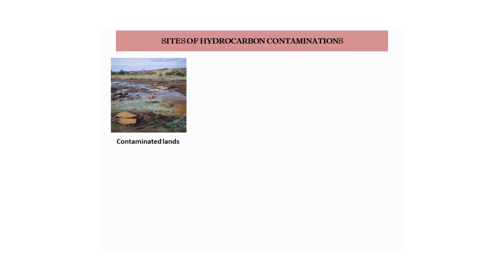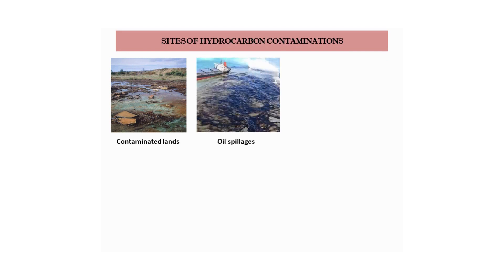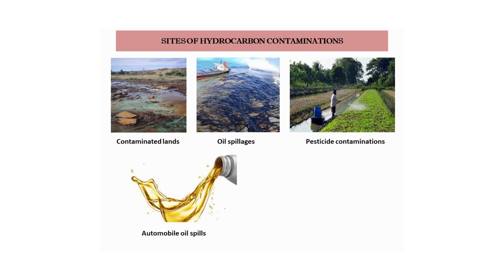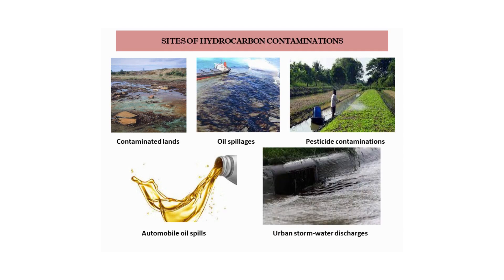What are the sites of hydrocarbon contamination in the environment? Different contaminated land areas from various industries and waste sites can be sites of hydrocarbon contamination. Oil spillages from oil mines in marine sea vents can also be contamination sites. Other sources include agricultural runoff from pesticide contaminations, automobile oil spills, and urban stormwater discharges.